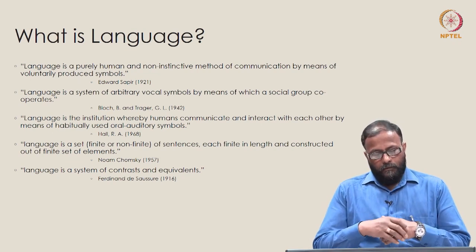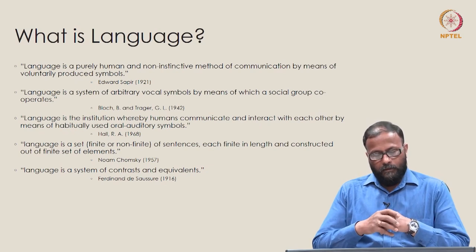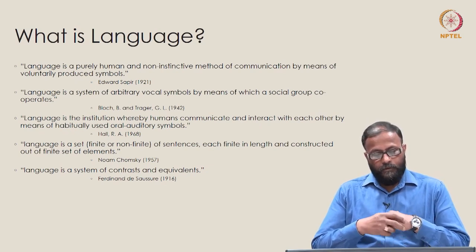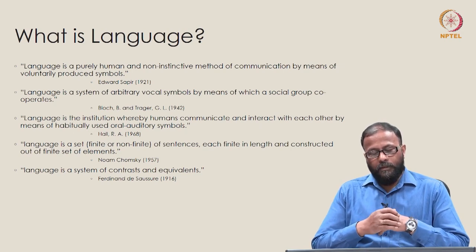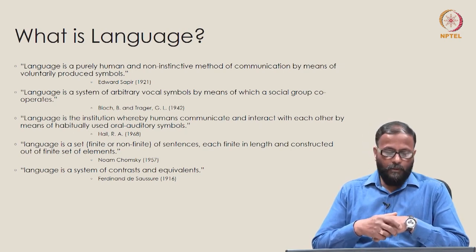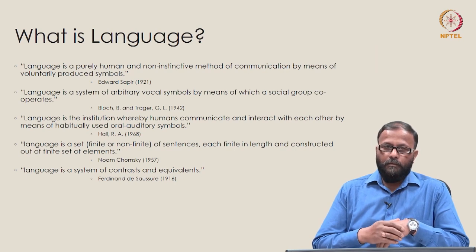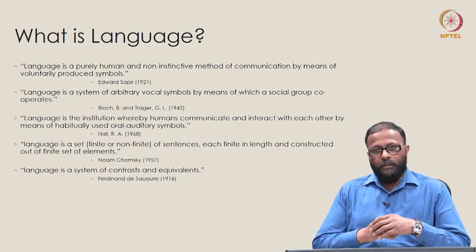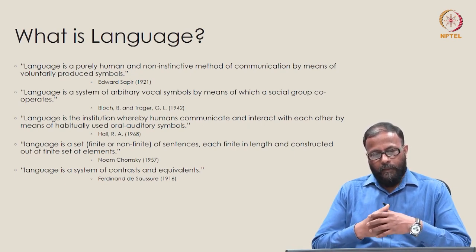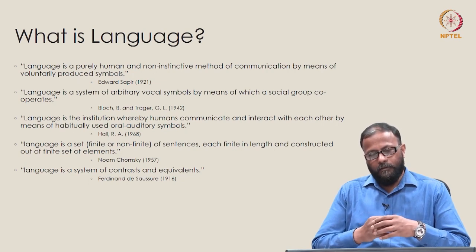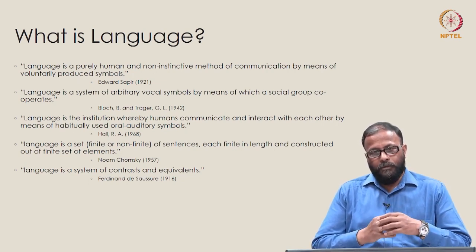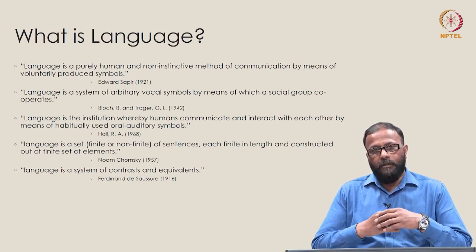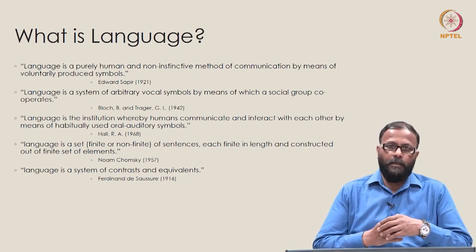Another statement by Bloch and Trager in 1942: language is a system of arbitrary vocal symbols by means of which a social group cooperates. A new word is introduced here — 'arbitrary' — which we will come to later. Again, vocal symbols are voluntarily produced, but these symbols are arbitrary in nature. They also emphasize the social aspect — that we need language to socialize, interact, communicate, and share.